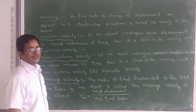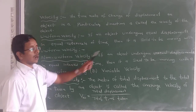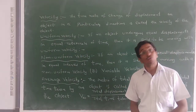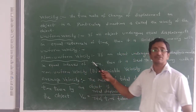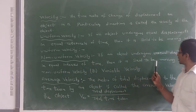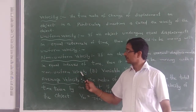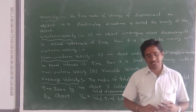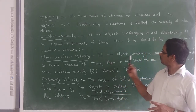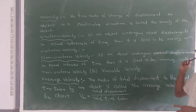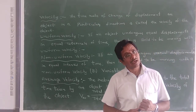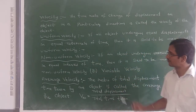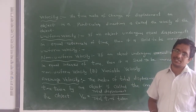Next concept is Non-Uniform Velocity. If an object undergoes unequal displacement in equal intervals of time, then it is said to be moving with non-uniform velocity. The other name is variable velocity. Also, if an object undergoes equal displacement with unequal intervals of time, we also call it non-uniform or variable velocity.